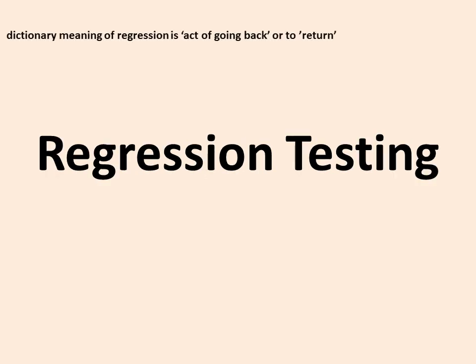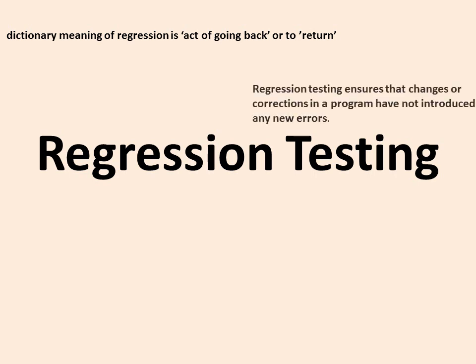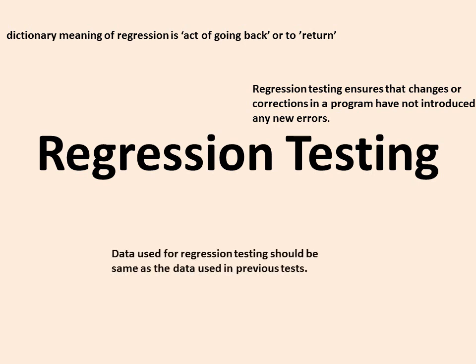The dictionary meaning of 'regression' is the act of going back or to return. Hence, in regression testing, we again check that changes or corrections in a program have not introduced any new errors. The data used for regression testing should be the same as the data used in the previous test — only then can objective regression testing be achieved.